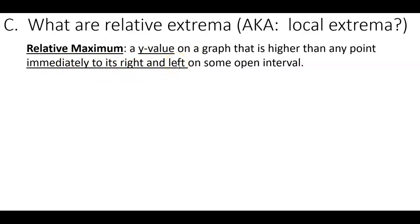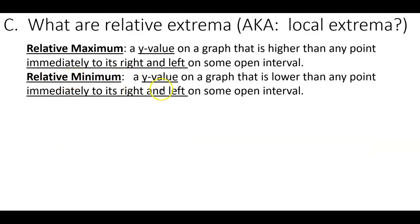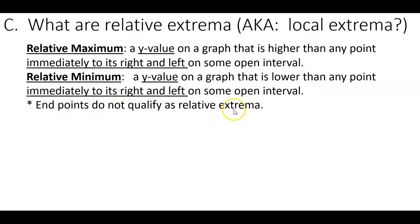A relative minimum is a y value that's lower than any point immediately to its right and left. In these cases we do not include endpoints, because the definition requires points to both the right and to the left. If you're at an endpoint you're missing a side — you either don't have a right side or a left side.